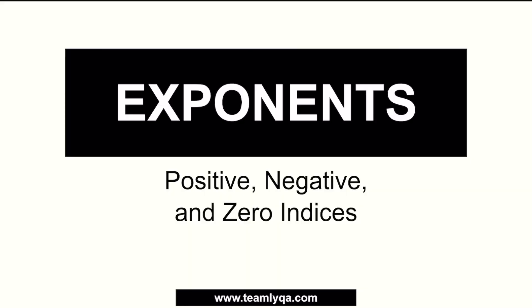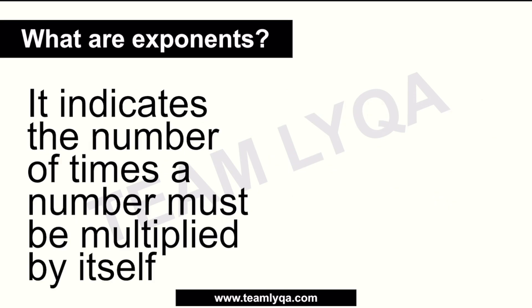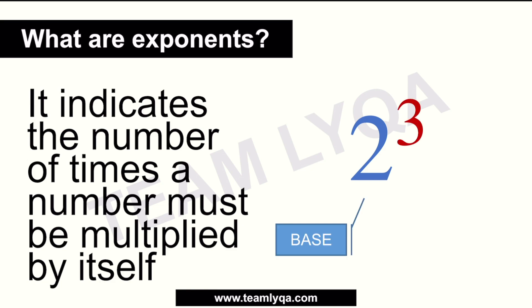Okay, so this is our lecture on exponents. We're going to cover positive exponents, what happens when it's negative, when it's zero, and also when it's a fraction. First of all, we have to talk about the definition. An exponent indicates the number of times that the number below — or the base number — must be multiplied by itself. For example, if we have 2 raised to 3, or 2 to the third power, the 2 is our base. The number on top is called the power, exponent, or index number.